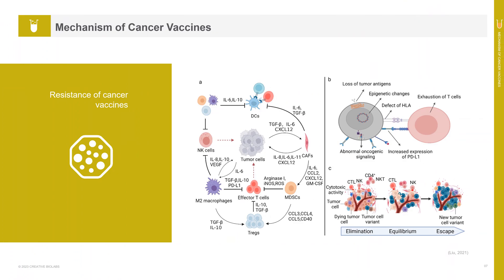Immune resistance or tumor immunoescape is a barrier in vaccine therapy, which results in resistance to cancer vaccines. Tumor immunoescape can be divided into intrinsic mechanisms determined by the characteristics of tumor cells, and external mechanisms involving tumor matrix components. These two mechanisms determine the efficiency of cancer vaccines. For tumor external resistance, immunosuppressive cells such as cancer-associated fibroblasts, myeloid-derived suppressor cells, regulatory T cells, and M2 macrophages, and immunosuppressive cytokines can inhibit the activation of effector T cells and dendritic cell-mediated T cells directly or indirectly in the tumor microenvironment.